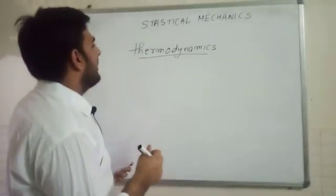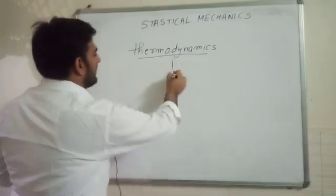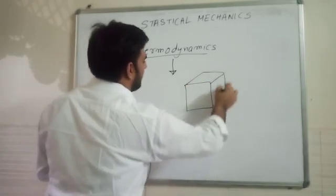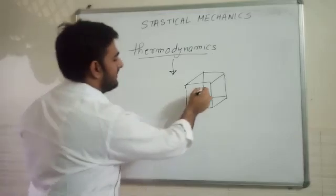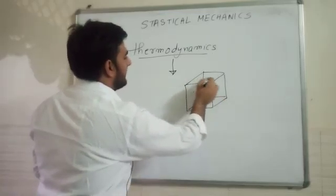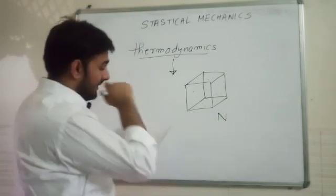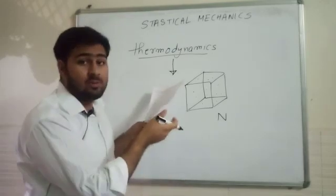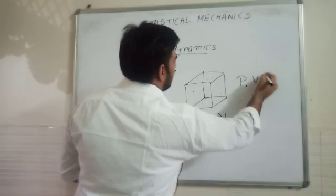Now, thermodynamics also has some limitations. Let's consider a thermodynamic system: a container containing some ideal gas. Let the number of molecules be N. Now, according to thermodynamics, we can describe the system by some state variables. These are the pressure, volume, and temperature.